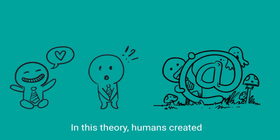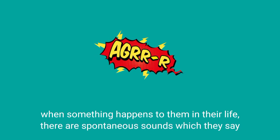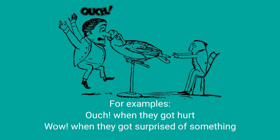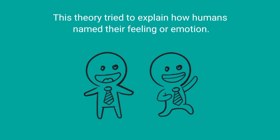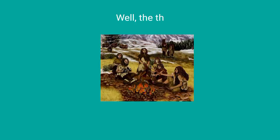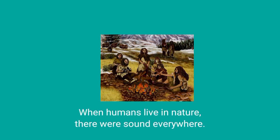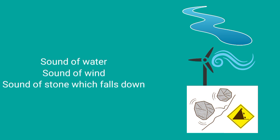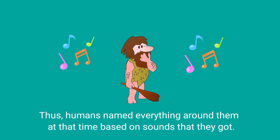The second theory is the Pooh-pooh theory. In this theory, humans create language from their emotions. When something happens to them, there are spontaneous sounds which they say — for example, 'ow' when they got hurt, or 'wow' when they were surprised by something. This theory tries to explain how humans named their feelings or emotions. The third theory is the Ding-dong theory. When humans lived in nature, there were sounds everywhere — sound of water, sound of wind, sound of stones striking together, and any other sounds. Thus, humans named everything around them based on the sounds that they heard.